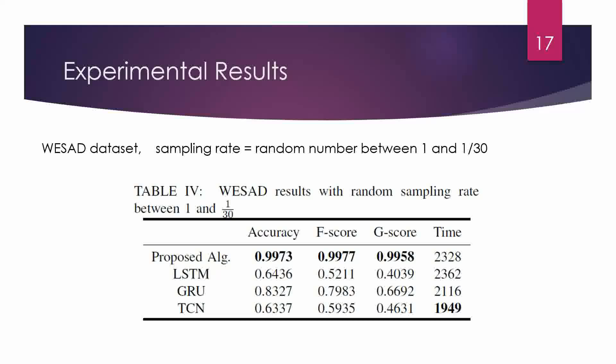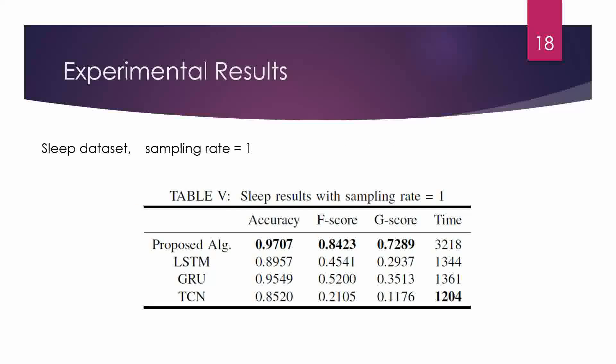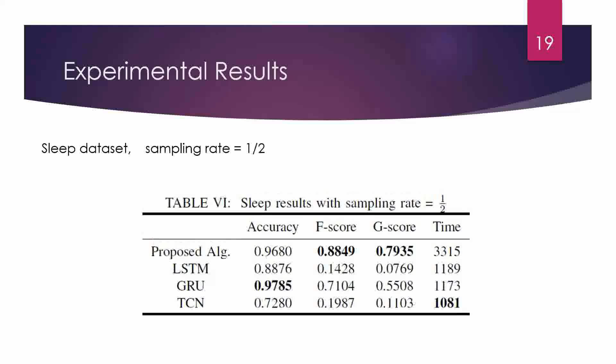In the next experiment, we use another dataset called the Slip dataset, which is more imbalanced. Again, the proposed algorithm has better results when the sampling rate equals 1. By changing the sampling rate to one-half, GRU has better accuracy, but in F-score and G-score the proposed algorithm is better. This is because the dataset is imbalanced and GRU classifies all data points into the majority class — hence higher accuracy but much lower F-score and G-score than the proposed algorithm.